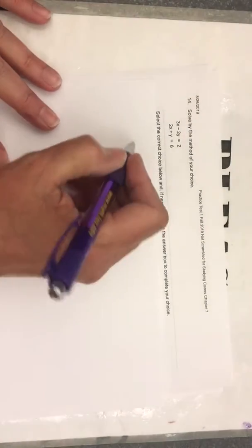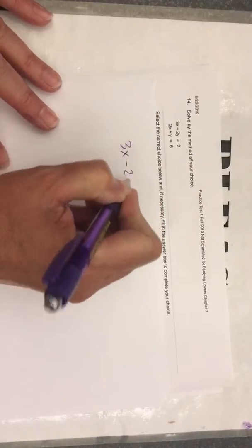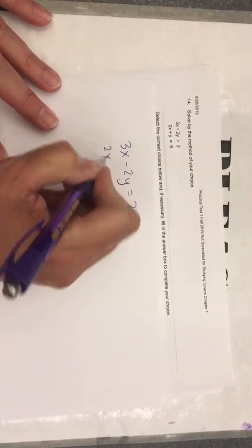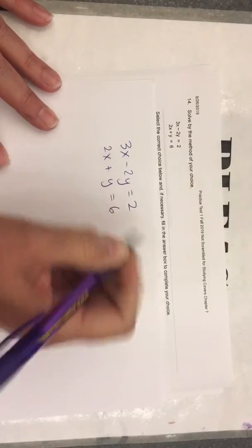Alright, this one right here. Solve by the method of your choice. I have 3x minus 2y equals 2, and 2x plus y equals 6.